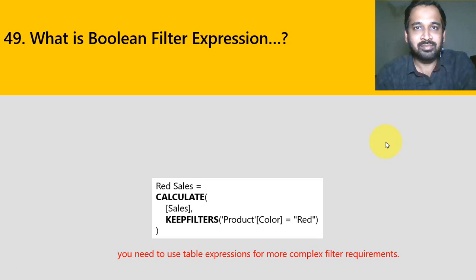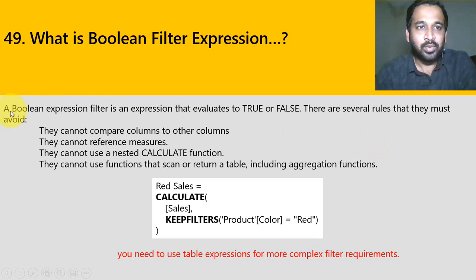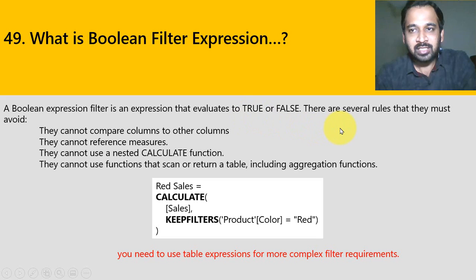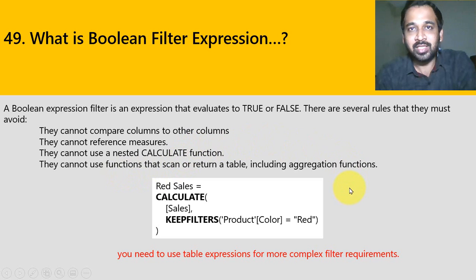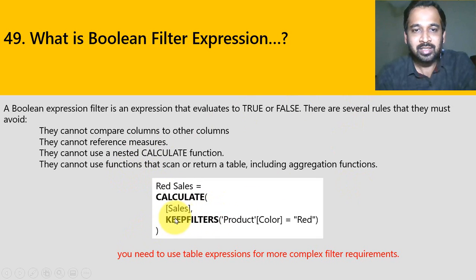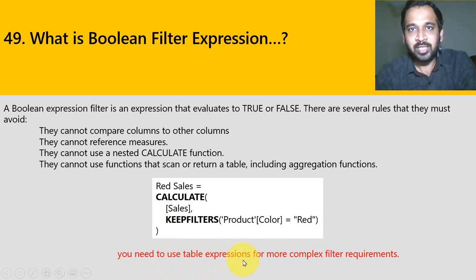What is a boolean filter expression? This is a little tricky. A boolean expression filter is an expression that evaluates to true or false. There are several rules — it cannot compare columns to other columns, cannot reference measures, cannot use nested CALCULATE functions, and cannot use functions that scan or return a table, including aggregation functions. For example: CALCULATE(Sales, Product[Color] = "Red"). For more complex filter requirements, you need to use table expressions.